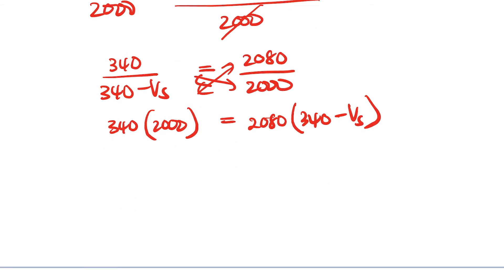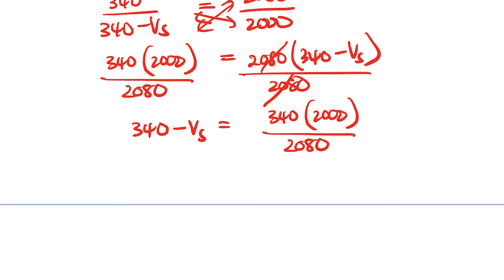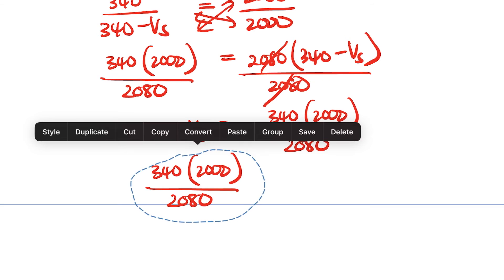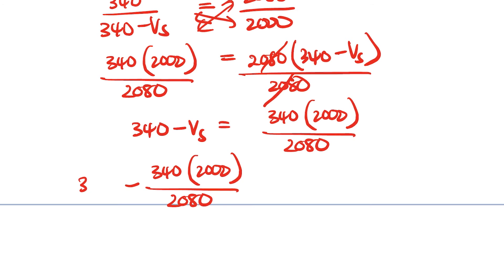So our unknown here is in this side. So we'll divide by 2,080 both sides. And then we'll have 340 minus Vs is equal to this. Okay, let me copy it. I'm not going to write it again. We have that there. So what are we going to do now? We're going to transpose. We're going to take this to this side and we take this to this side. So basically what are we going to have? So we're going to have this minus of it. Yeah, so it's going to be minus that and 340 minus that.